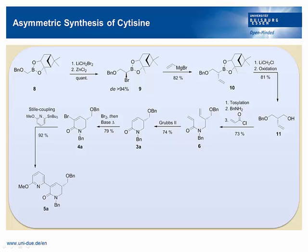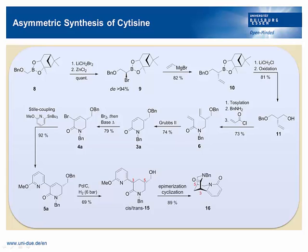After a coupling and hydrogenation, we obtain 15 as an inseparable cis-trans mixture. However, by borrowing Gallagher's epimerization-cyclization procedure, both epimers were converted into bispidine 16, which is only a carbonyl reduction and a deprotection away from cytisine.